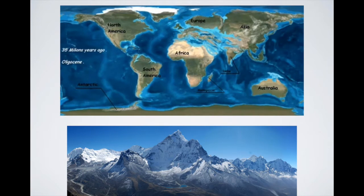In this picture, the map on top shows an approximation from computer models of what the continents and oceans looked like 35 million years ago, right at the start of the Oligocene Epoch. You can see that South America and Australia had just split away from Antarctica, creating a new passage for the oceans to move through. The picture on the bottom is of the Himalayan Mountains — including Mount Everest — which were formed during this time.